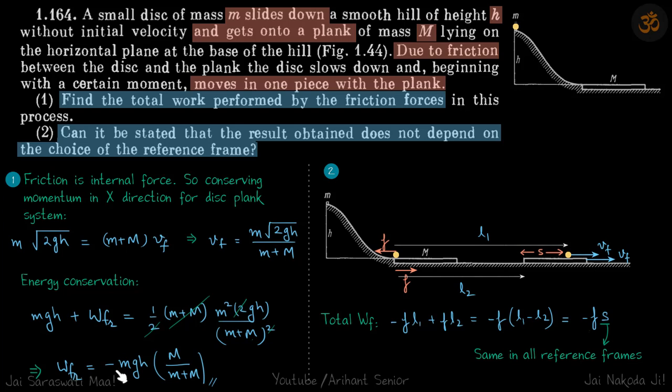Even though you can imagine that work done on the plank by the friction is positive, because the plank is moving forward because of the sliding friction. But work done on the disc due to friction is negative, because the disc is moving forward while the friction is acting on the disc backwards. So all that while it's sliding.